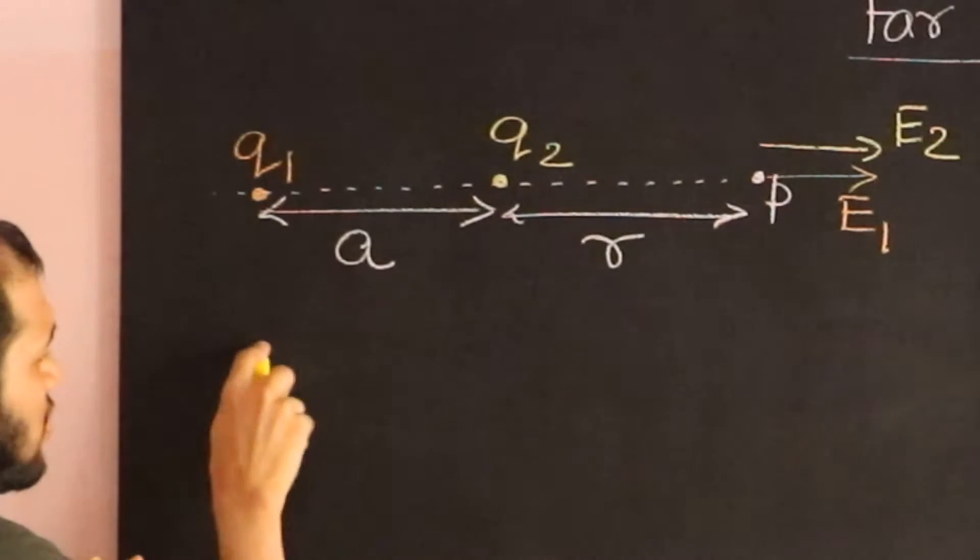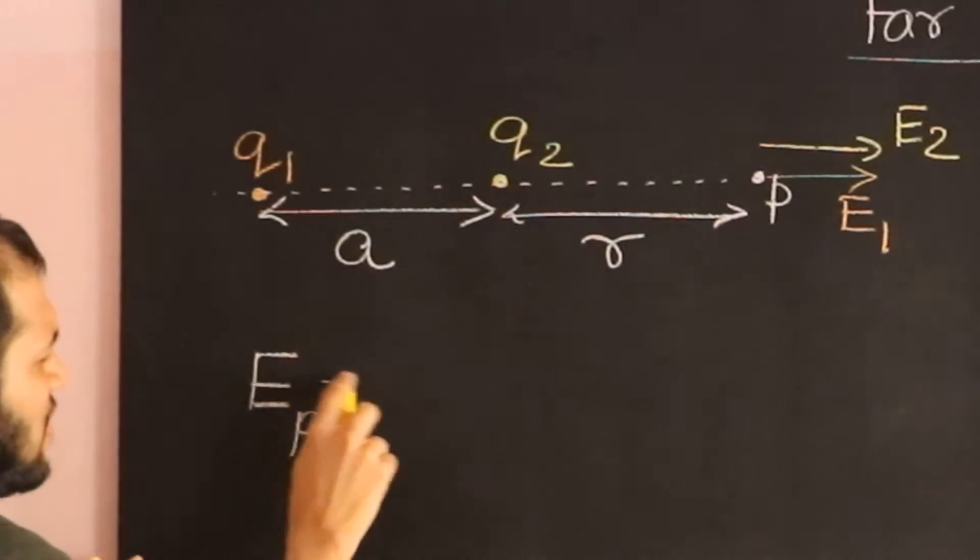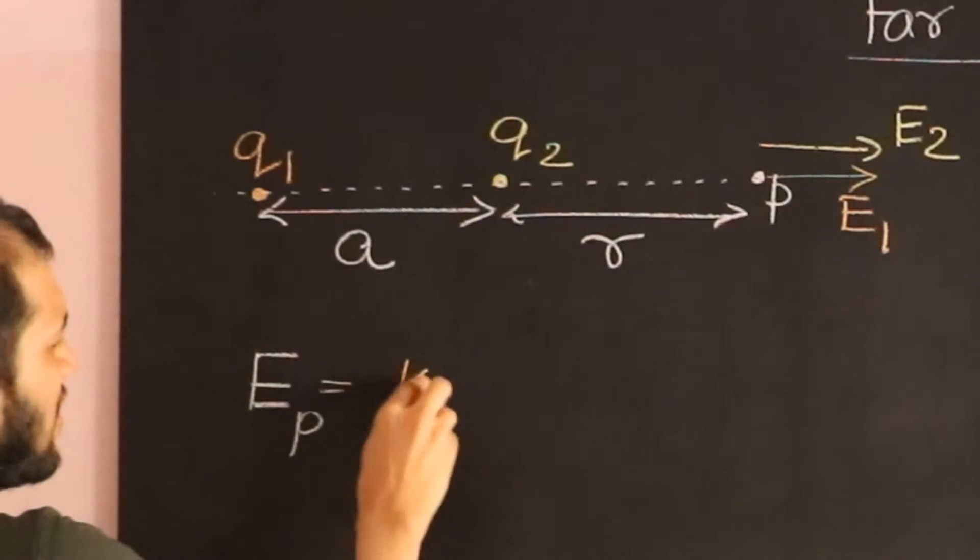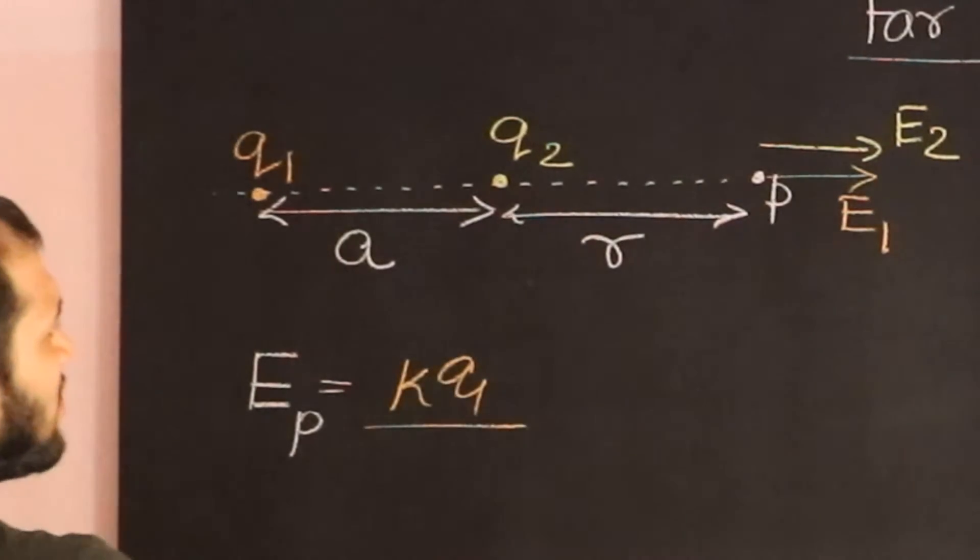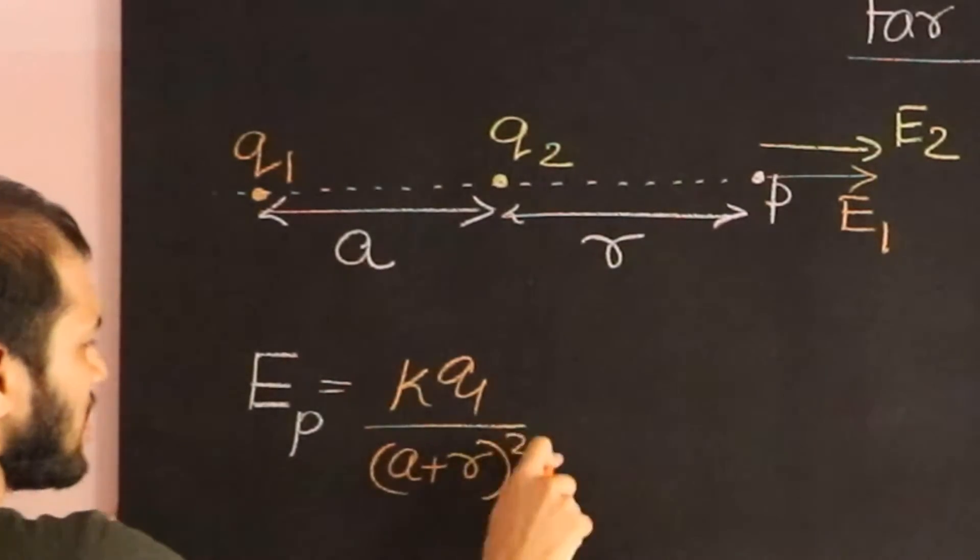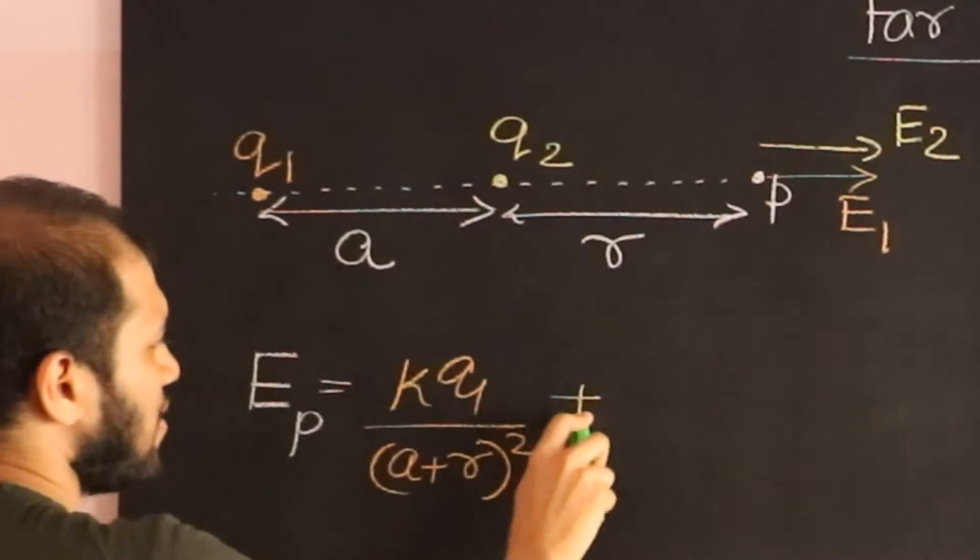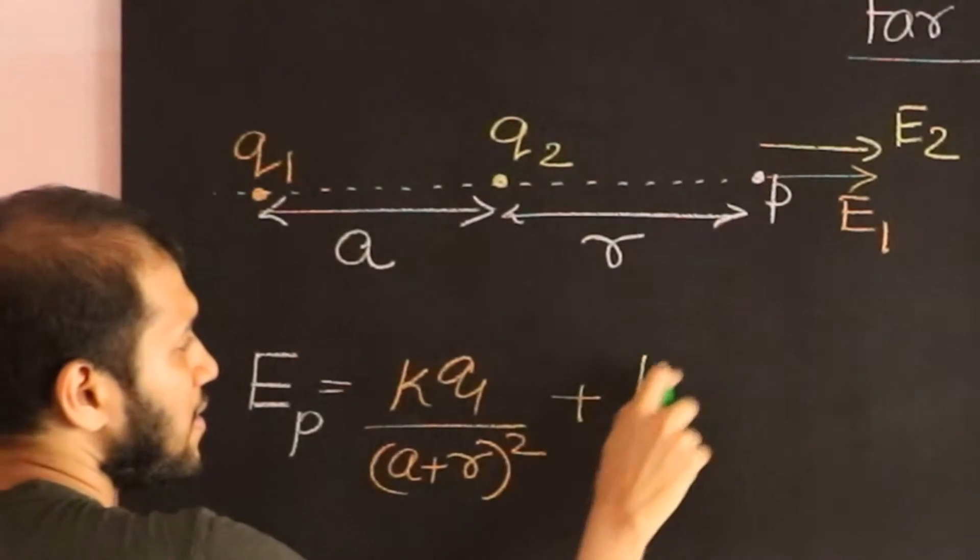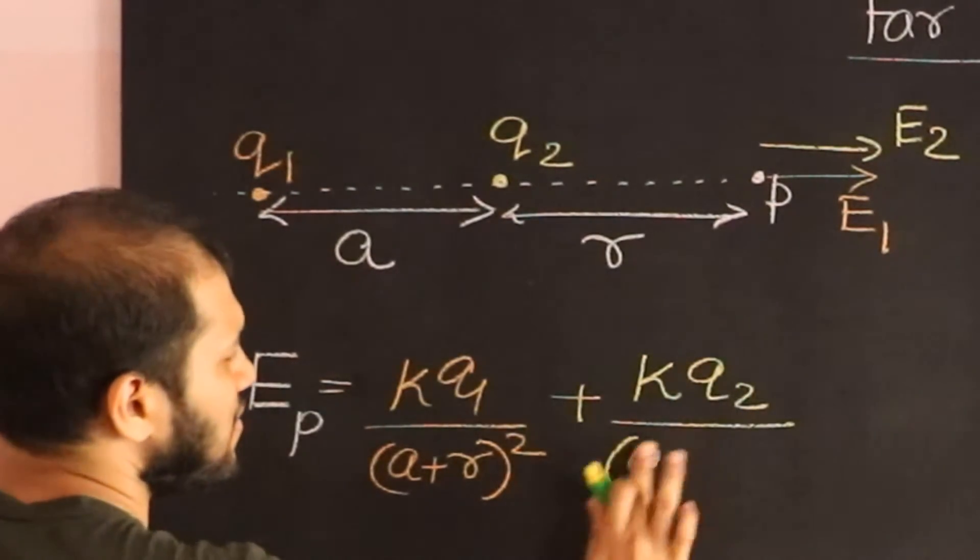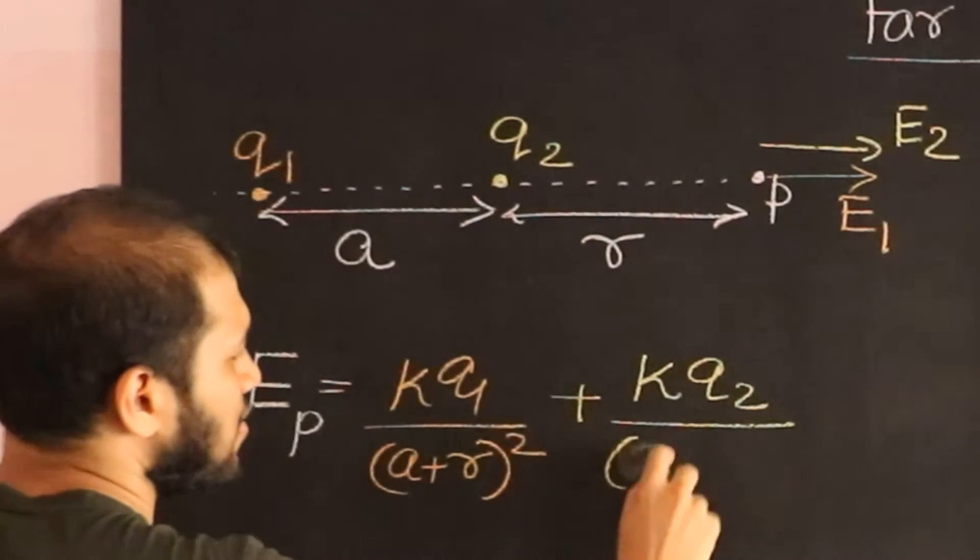Then the electric field, the total electric field at point P would be the electric field E1 which is going to be KQ1 divided by (a+R)² plus, I'm assuming both are positive, KQ2 divided by R².